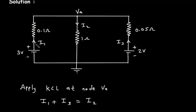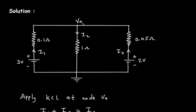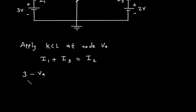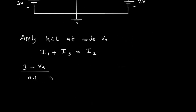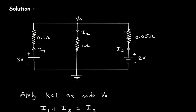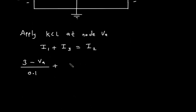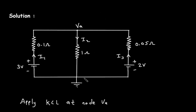Now, I1 is higher voltage minus lower voltage divided by resistance, so I1 equals (3V minus VA) divided by 0.1 ohm. Plus I3, which is again higher voltage minus lower voltage: (2 minus VA) divided by 0.05 ohm. This equals I2, which is VA minus 0 divided by 0.05 ohm.